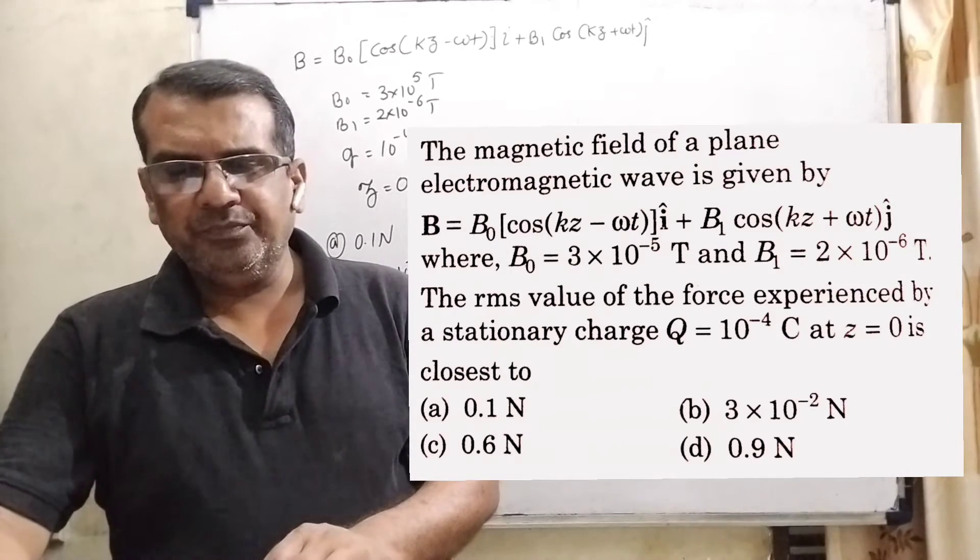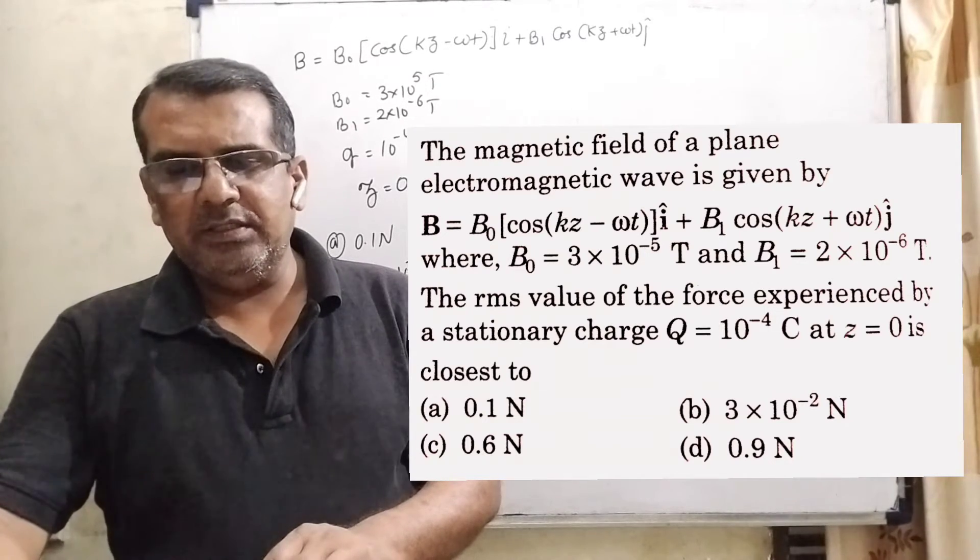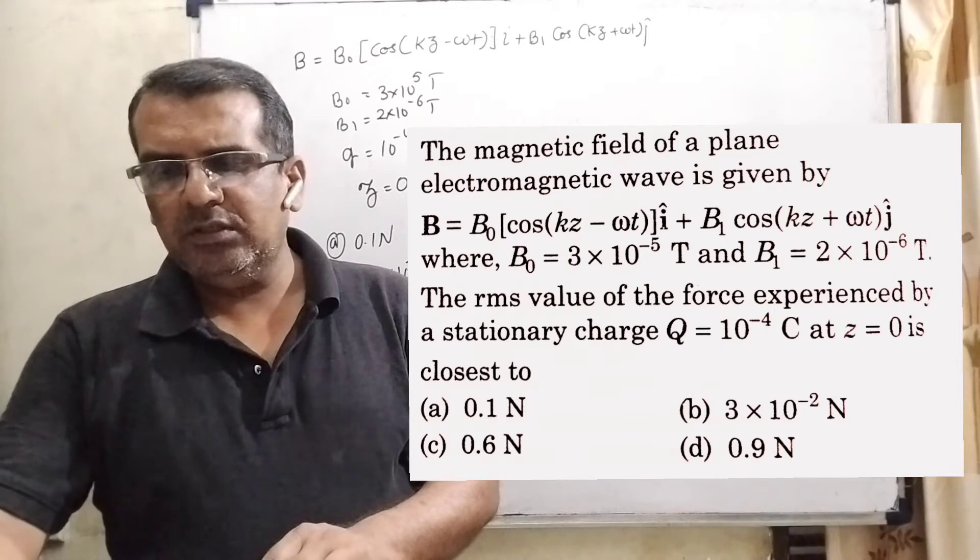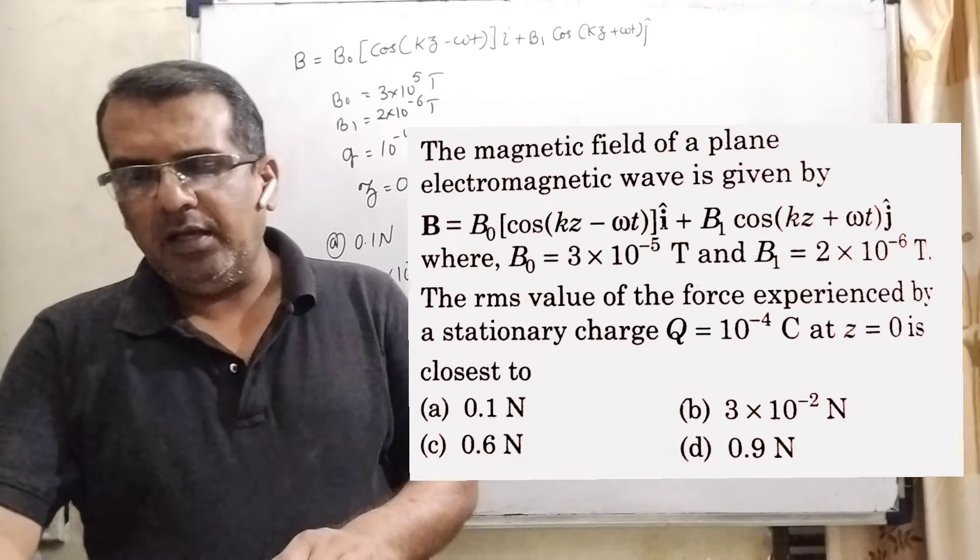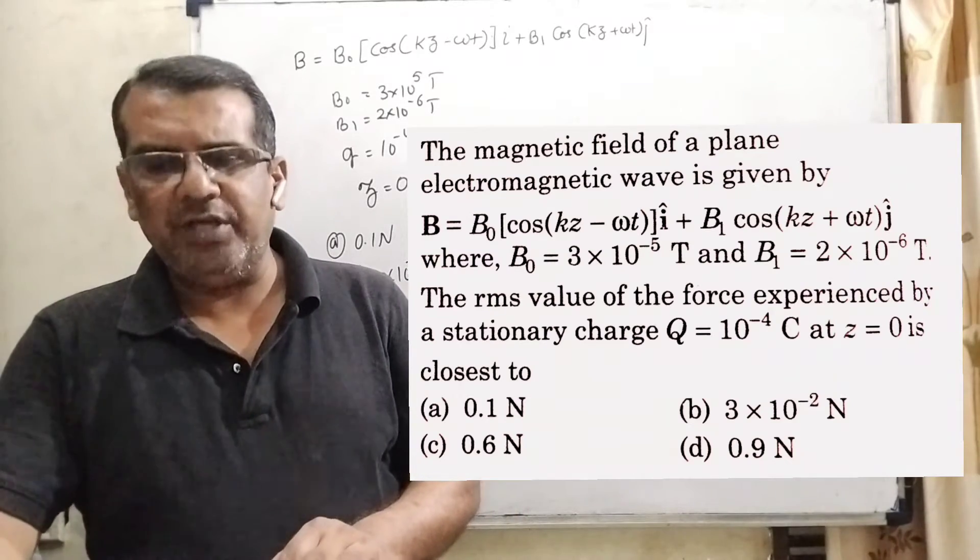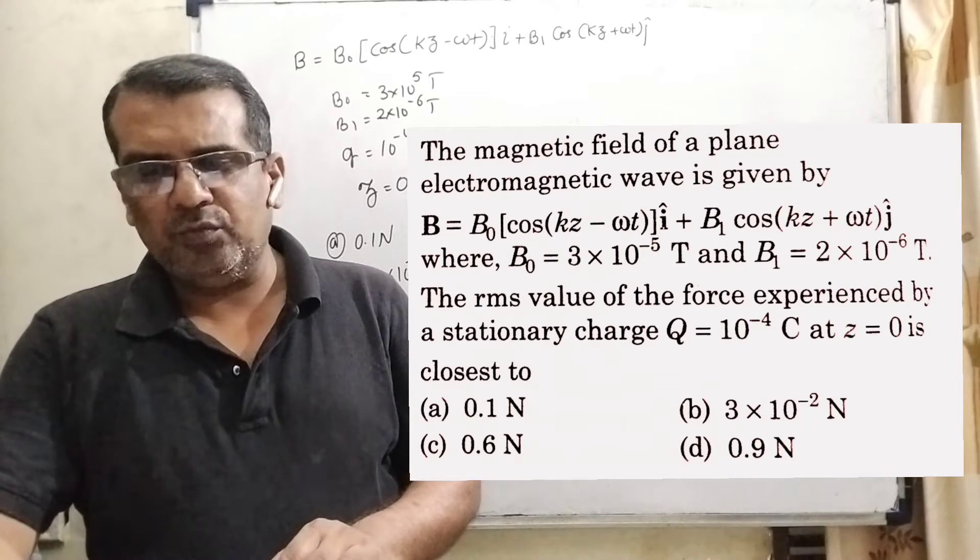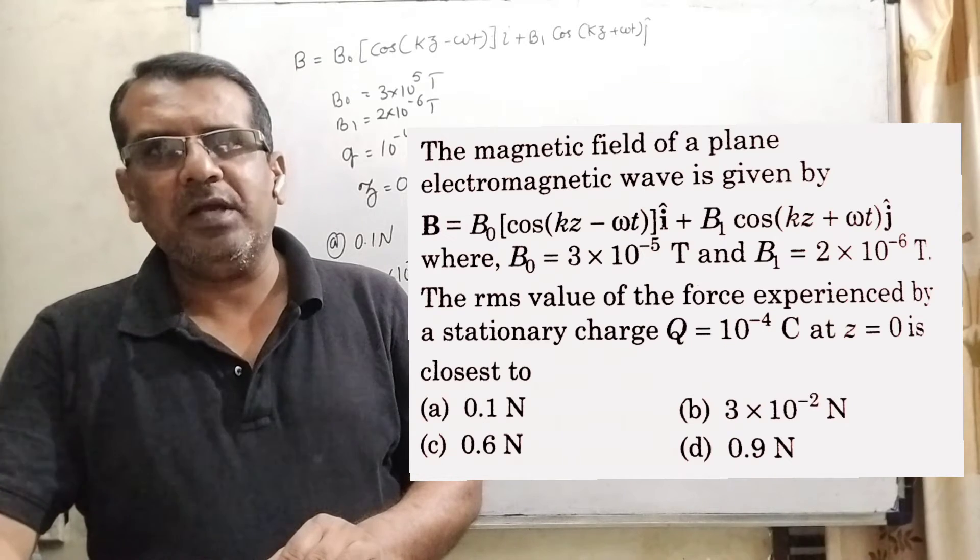Here is the question. The magnetic field of a plane electromagnetic wave is given by B equal to B₀ into bracket cos(kz minus ωt) i plus B₁ cos(kz plus ωt) j unit vector, where B₀ is given 3 into 10 raised to the power minus 5 tesla and B₁ equal to 2 into 10 raised to the power minus 6 tesla.